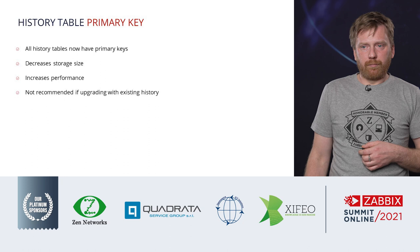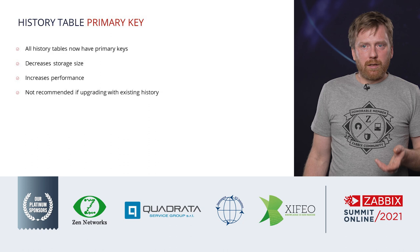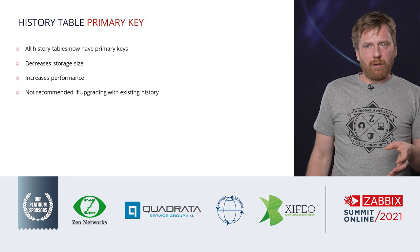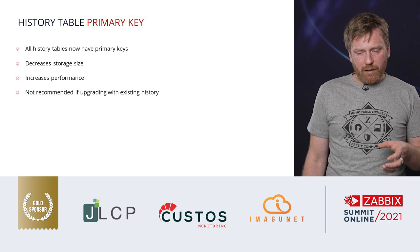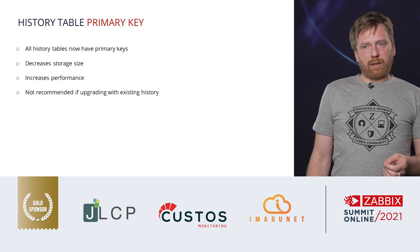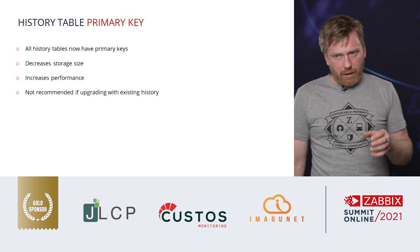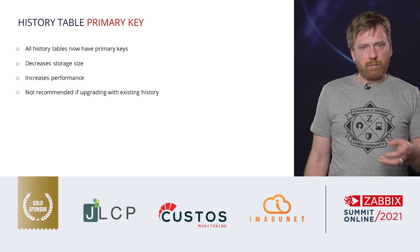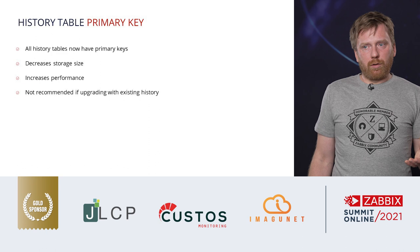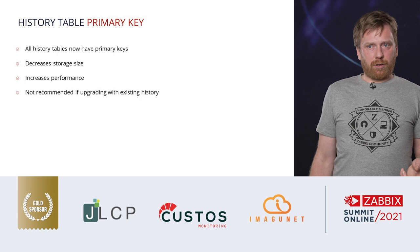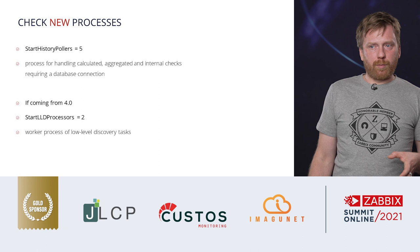After the upgrade there are additional things to take care of. In version 6.0 we changed the DB schema of history tables — they now contain primary keys. Due to performance concerns and potential issues with duplicates, this change is not done automatically during the upgrade, and we don't recommend simply running an ALTER TABLE, as it will be very slow depending on table size and may fail if duplicates exist. For new installations this will be there by default; for older ones you need to consider if and how you want to enable this.